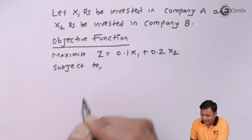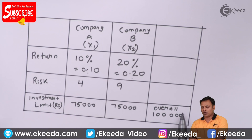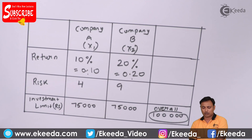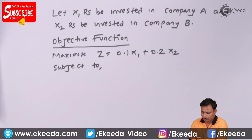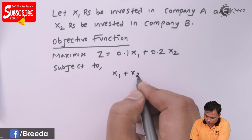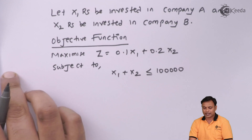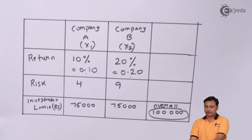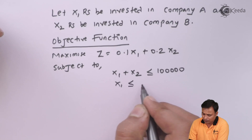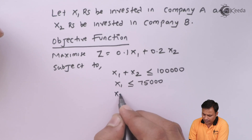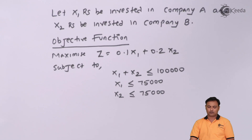Subject to the following constraints: First, the total investment cannot exceed 1 lakh — so x1 + x2 ≤ 1,00,000 (capital budgeting constraint). Second, the investment in either company cannot exceed 75,000 — so x1 ≤ 75,000 and x2 ≤ 75,000.